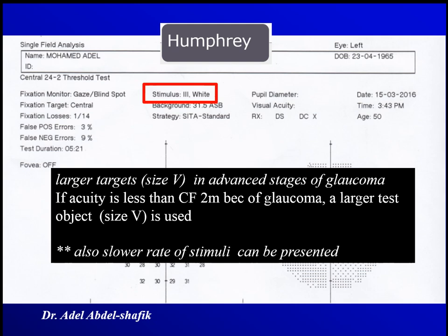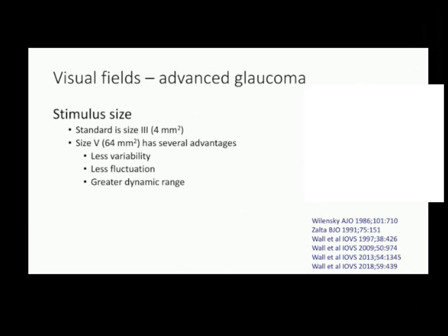Regarding stimulus size, we mostly use size 3, but in cases of advancing glaucoma we can use size 5. This is especially indicated if visual acuity is less than counting fingers at 2 meters due to glaucoma. We can also adjust the program to run at a slower rate so the patient can follow more easily. Size 3 is the standard, and size 5 is much larger.